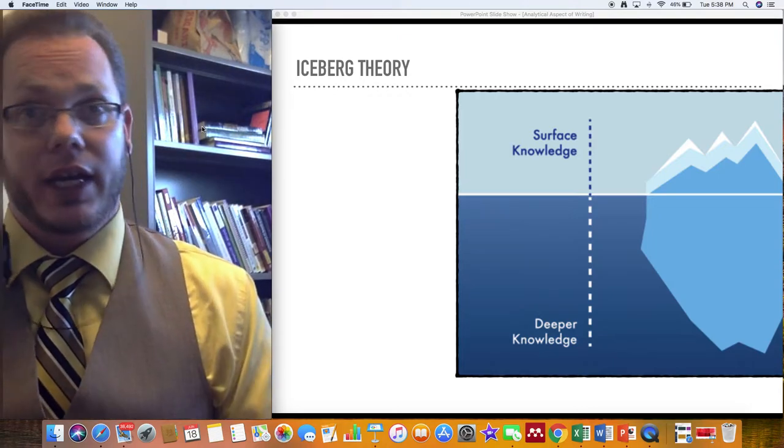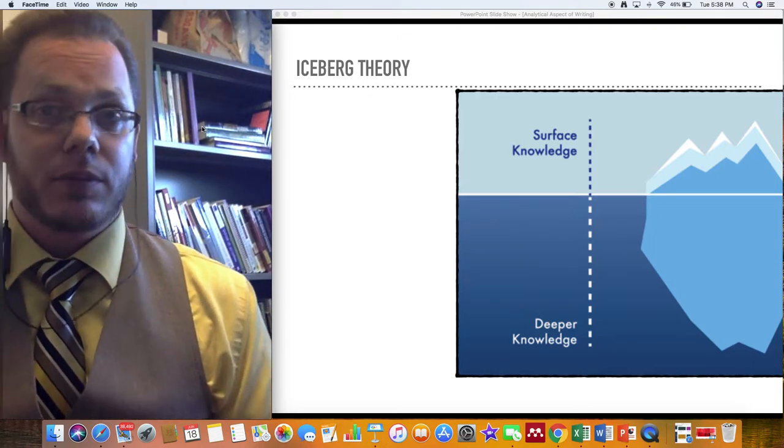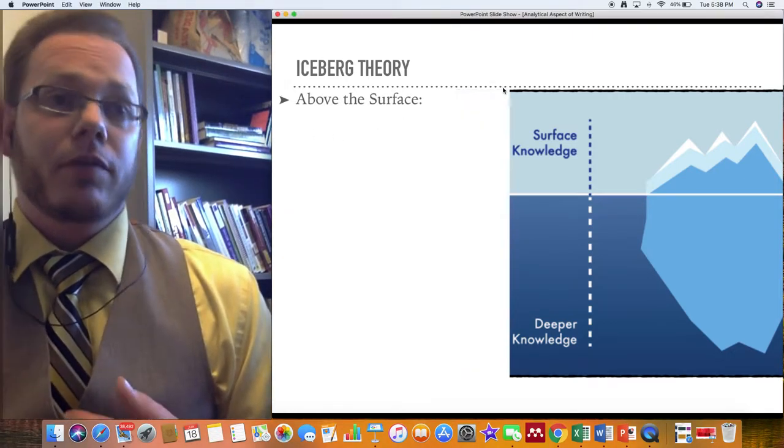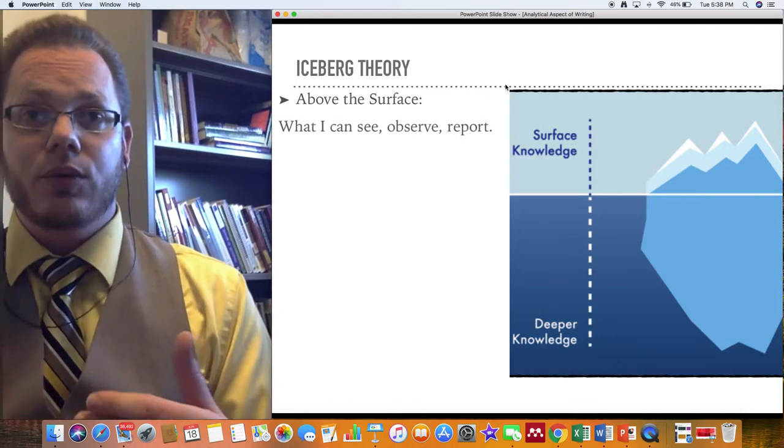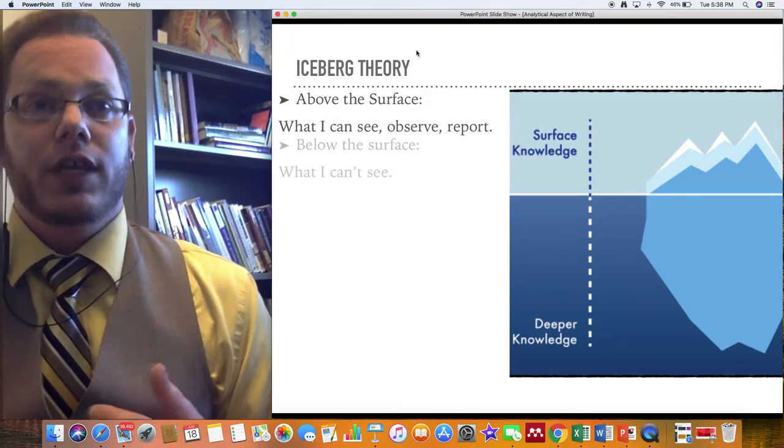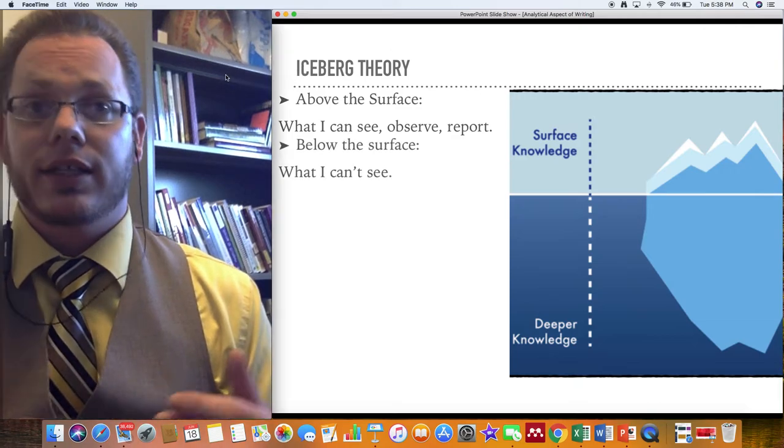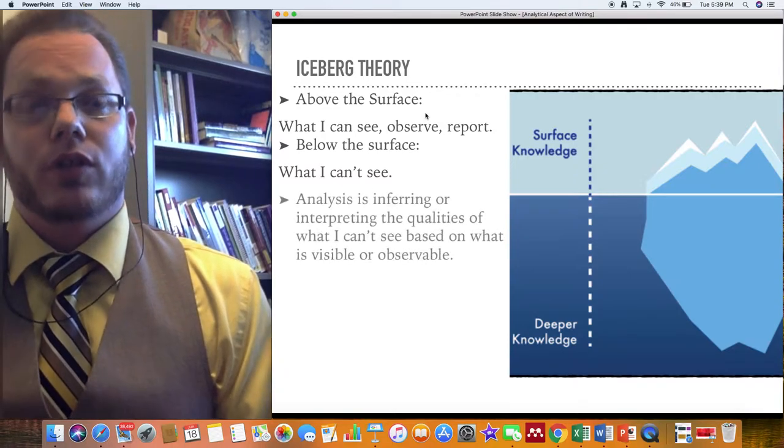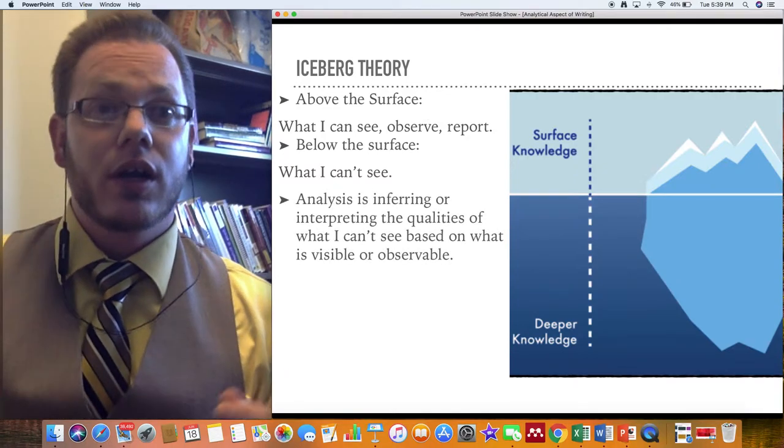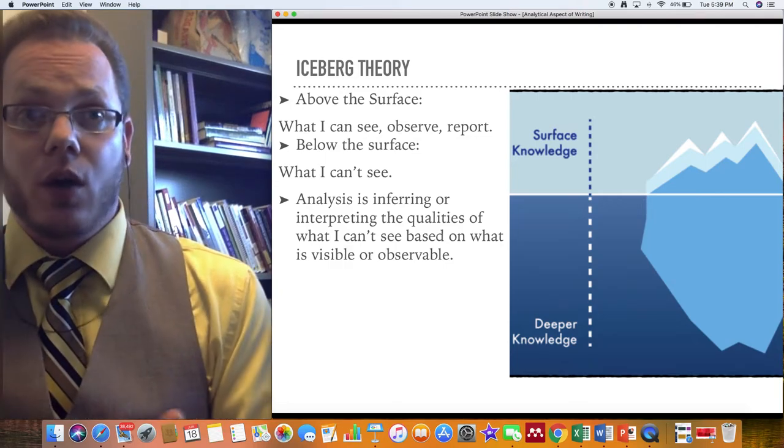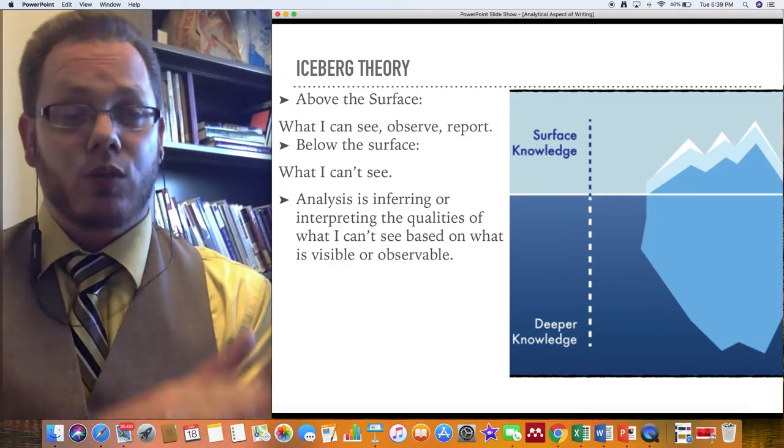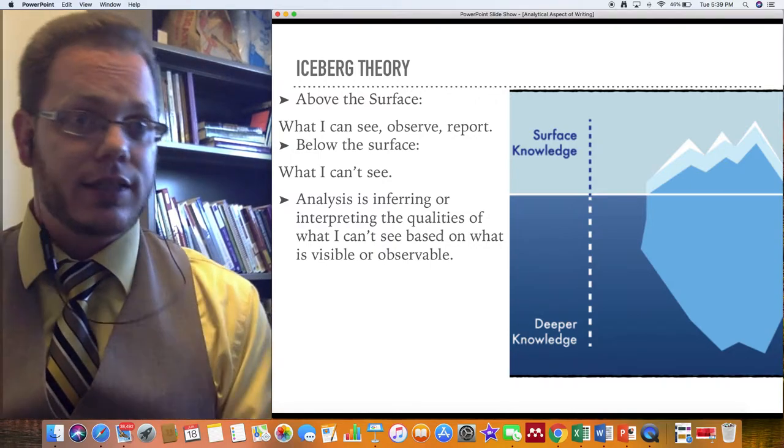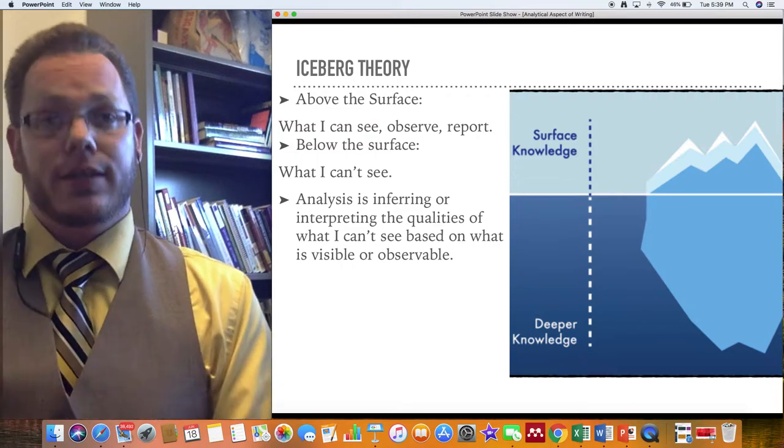The idea is that there's a lot more mass, there's a lot more to look at and understand, the deeper you go below the surface. Usually it's like twenty-eighty ratio or thirty percent, seventy-six percent what's on the surface versus what's below. Above the surface, we're dealing with what I can see, observe, report. Below the surface, we're dealing with what I can't see. If you're below the surface, that's when you're getting to analysis. You are inferring or interpreting the qualities of what you can't see based on what is visible or observable.